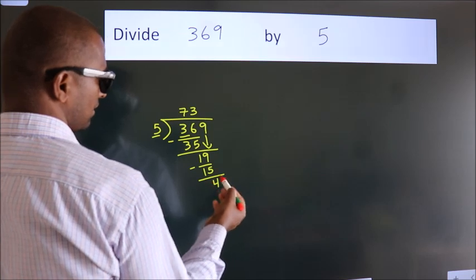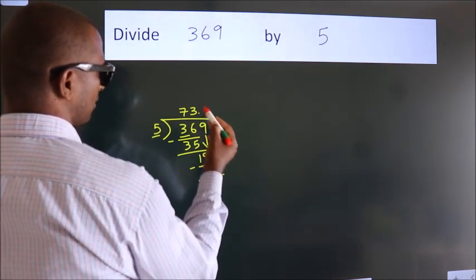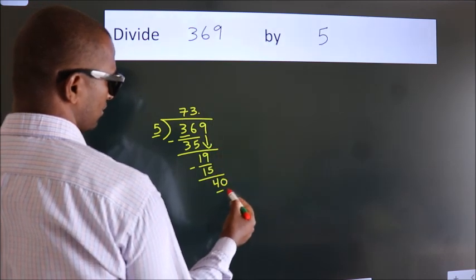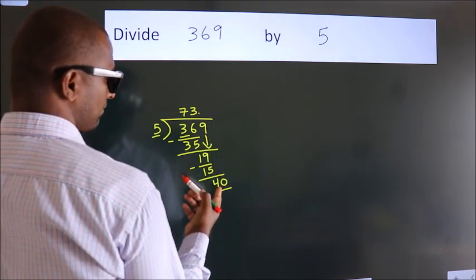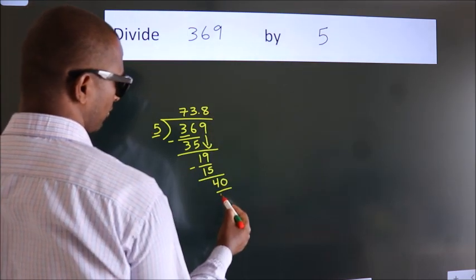After this, no more numbers to bring down. So what we do is, we put a dot and take 0, giving us 40. When do we get 40 in the 5 table? 5 times 8 equals 40.